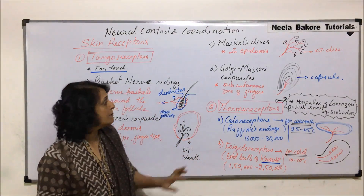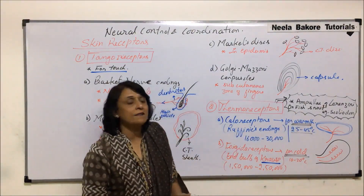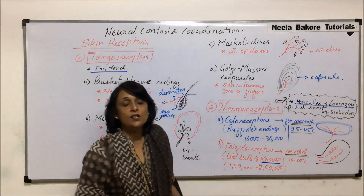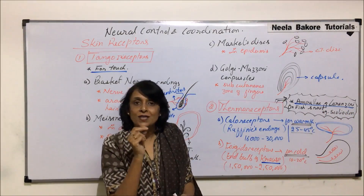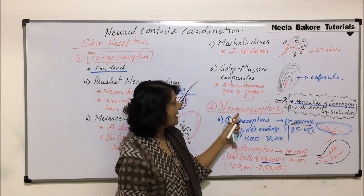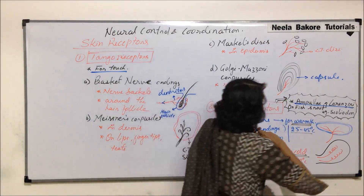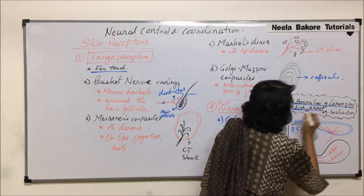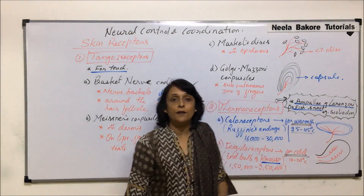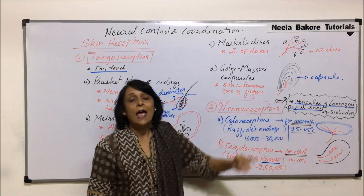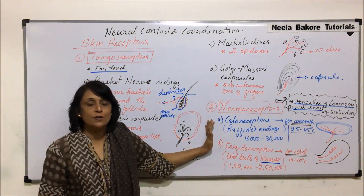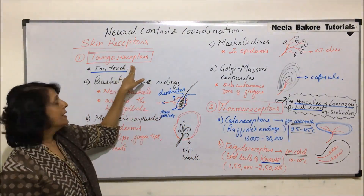One more very important thing on which questions are asked in competitive exams is the ampulla of Lorenzini. This particular receptor is found at the fish snout — the tip part of the snout has these thermoreceptors. So ampulla of Lorenzini are thermoreceptors found on the fish snout, especially in fishes like Scoliodon, which is known as dogfish.